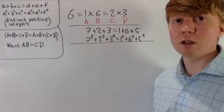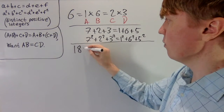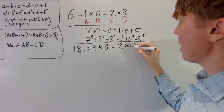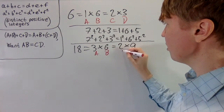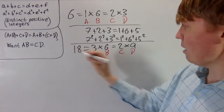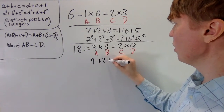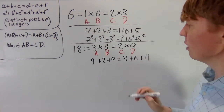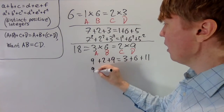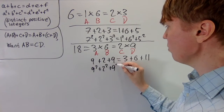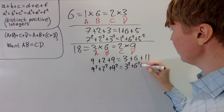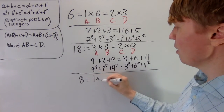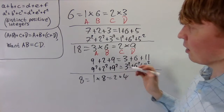You might get unlucky with your choice and end up with repetition. Take 18 for example: we can write it as 3×6 and also as 2×9. If we choose those as a, b, c, d, we run into problems because a+b = 9, giving us a repeated 9 in the list. So avoid this. Using 8 instead — 1×8 and 2×4 — works fine with no repetitions.